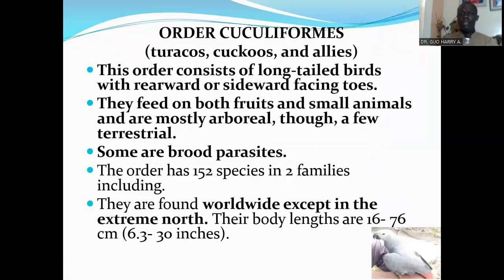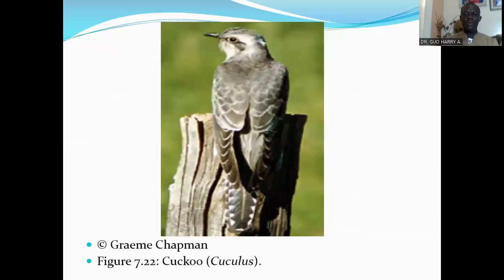The next order is Order Cuculiformes, which consists of the turacos, cuckoos, and allies. This order consists of long-tailed birds with rearward- or sideward-facing toes. They feed on both fruits and small animals and are mostly arboreal, though a few are terrestrial. Some are brood parasites. The order has 152 species in two families, including the cuckoos and turacos. They are found worldwide except in the extreme north. Their body lengths are 16 to 76 centimeters. Here is a cuckoo species of the order.